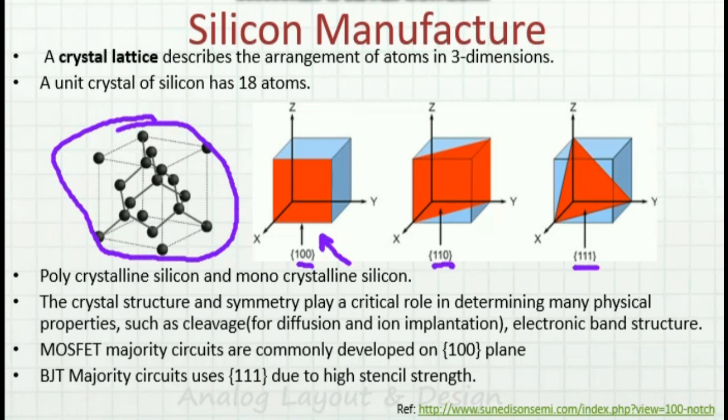The crystal structure and its symmetry play a critical role in determining many physical properties, such as cleavage for diffusion and implantation — whether it is easy or difficult — and the electronic band structure, which tells about the mobility.